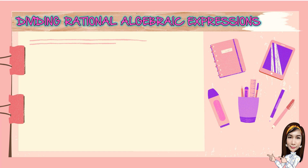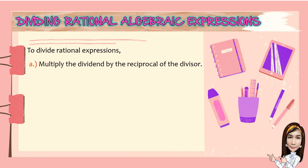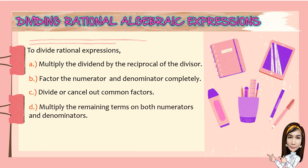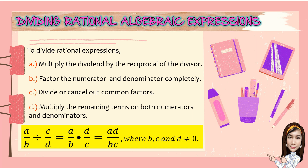Now, for our lesson on dividing rational algebraic expressions. To divide rational expressions: first, multiply the dividend by the reciprocal of the divisor; second, factor the numerator and denominator completely; third, divide or cancel out common factors; and lastly, multiply the remaining terms on both numerators and denominators. So if we have a over b divided by c over d, that equals a over b times d over c, which equals ad over bc, where b, c, and d are not equal to 0.